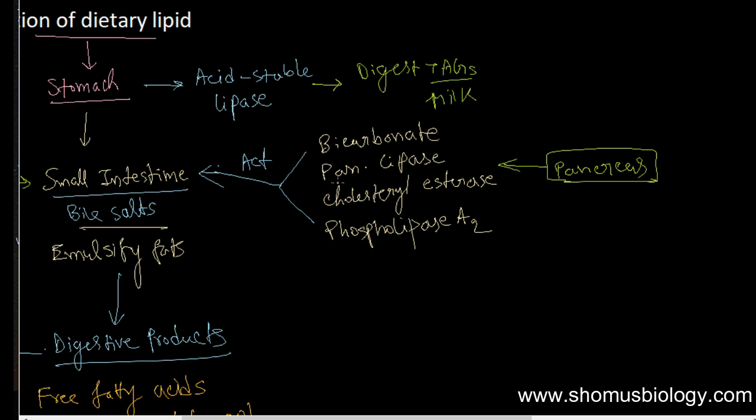Bicarbonate ions help emulsify the fat, and pancreatic lipase performs the job of lipid digestion predominantly in the small intestine.